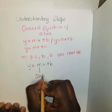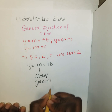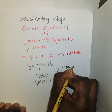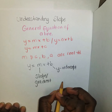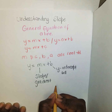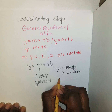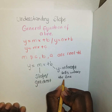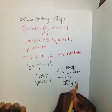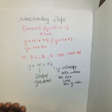In y = mx + b, the m is known as the slope or the gradient — any word you use means the same thing. And this b here is the y-intercept, which tells you where the line cuts the y-axis.